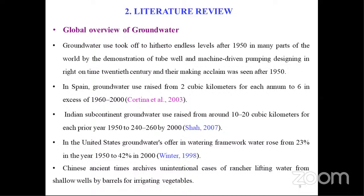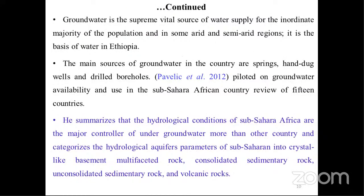Different literature discusses groundwater potential and occurrence. Groundwater use increased significantly after 1950 in many parts of the world with the development of fuel and machine-driven pumping. In Spain, groundwater extraction grew from 2 cubic kilometers per annum to over 6. In India, groundwater use rose from around 10 up to 20 cubic kilometers per year. Groundwater is a supremely vital resource of water supply for the majority of the population. The main sources in the country are springs, hand daggers, and drilled boreholes, as used in sub-Saharan Africa — a review of 15 countries.